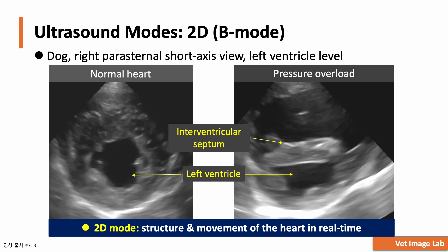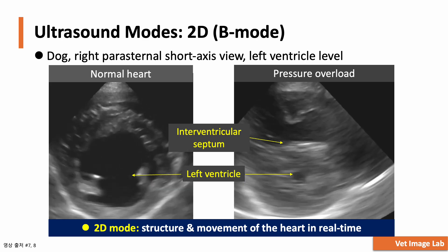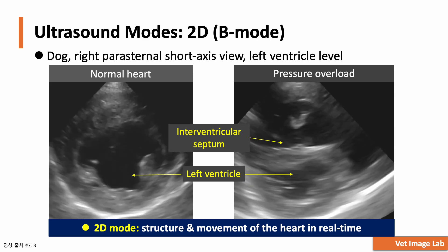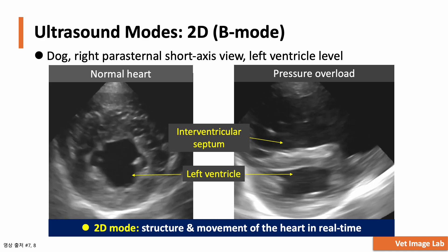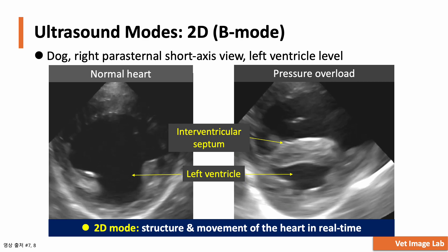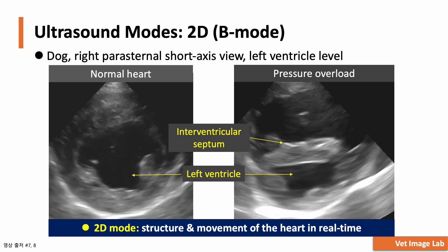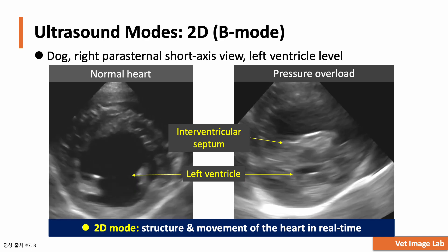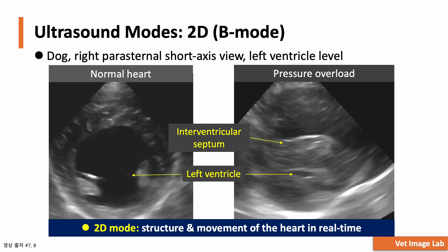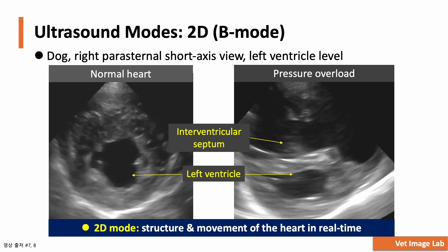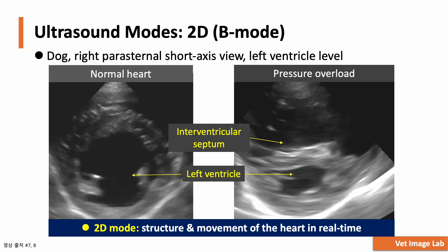Let's look at another important B-mode application: assessing ventricular shape and pressure overload. Here we have two echocardiographic images obtained from a right parasternal short-axis view. On the left, we see a normal heart where the left ventricle maintains its typical round shape. On the right, this dog has right ventricular pressure overload — notice how the interventricular septum is flattened instead of curving naturally. This D-shaped left ventricle is a hallmark of conditions like pulmonary hypertension or right-sided heart disease. B-mode is essential because it allows us to evaluate both structural shape changes and dynamic motion changes simultaneously.